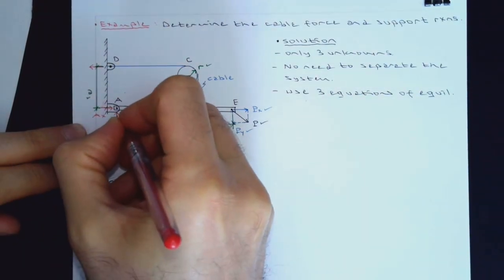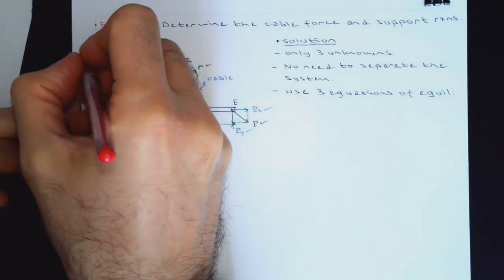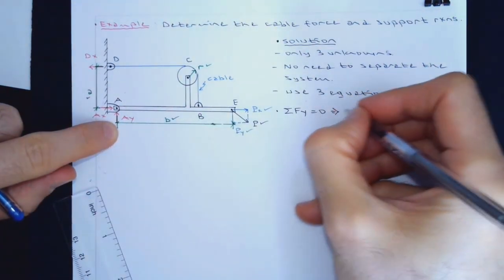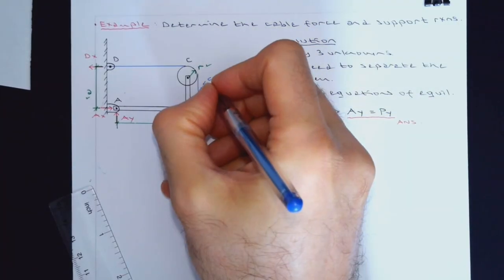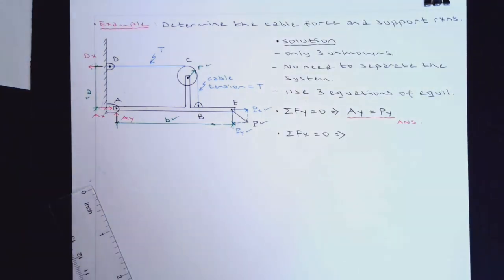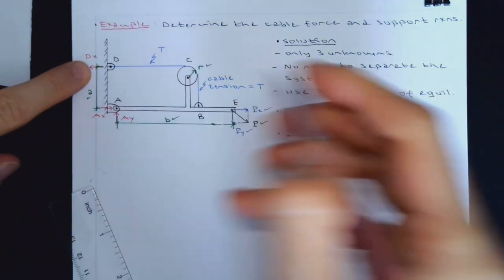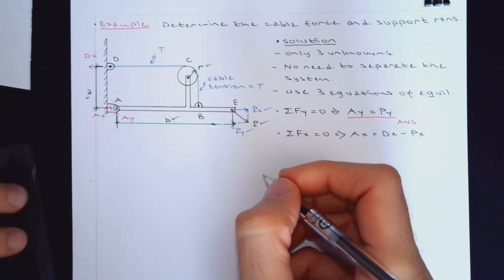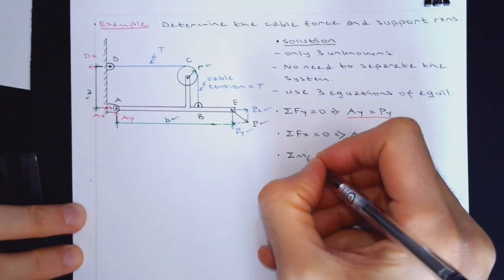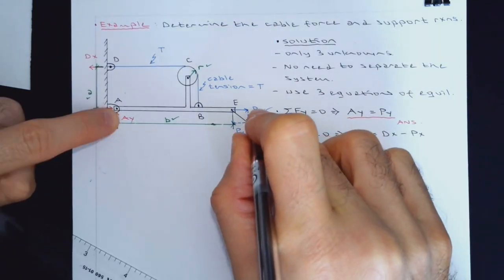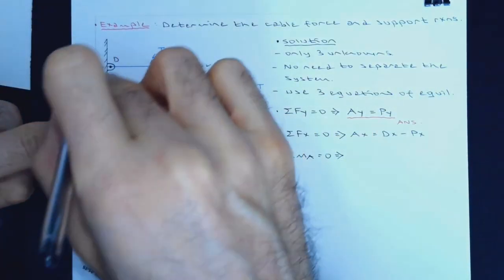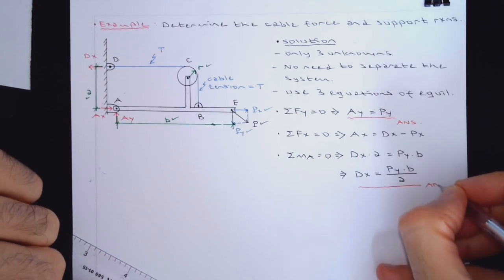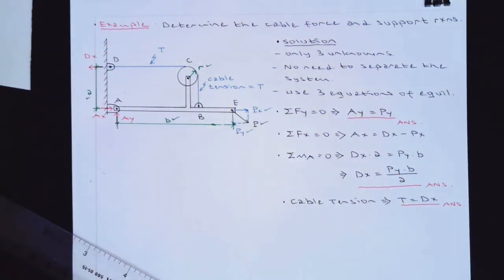This support reaction, horizontal one, call this Ax. Vertical one, call this Ay. Call this Dx. Start from Y, because Y is the easiest one. There is really only one unknown, which is Ay. Then Fx equal to zero. Call this cable tension equal to T. And I can easily say Dx the same as T. Ax would be Dx minus Px. I would need the moment equation. It doesn't really matter what point either A or D. Px will not show up in that equation. Only two forces will show up. Dx times A would be Py times B. That is answer because we know all these three variables. That's given. All right. That concludes the problem. We were able to solve this without disintegrating it from the pin.